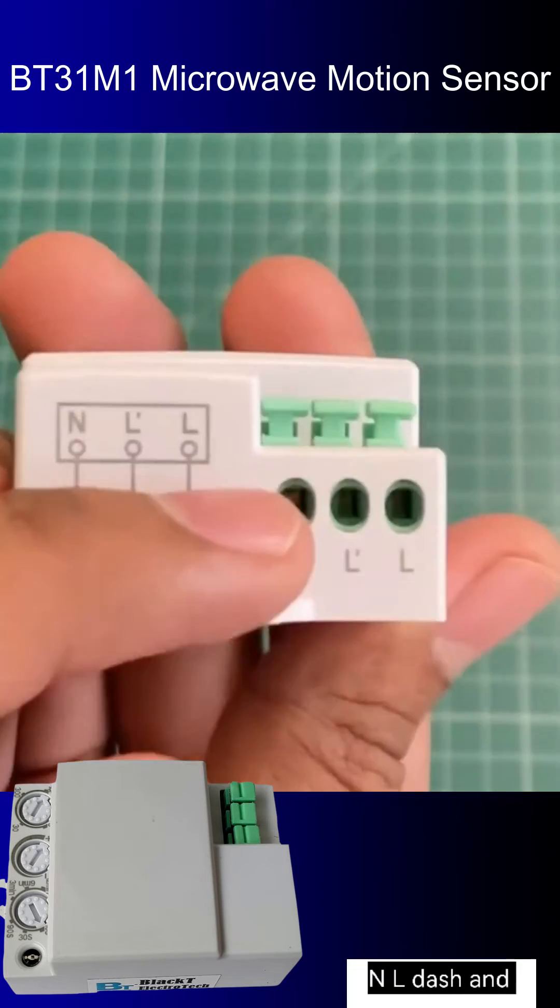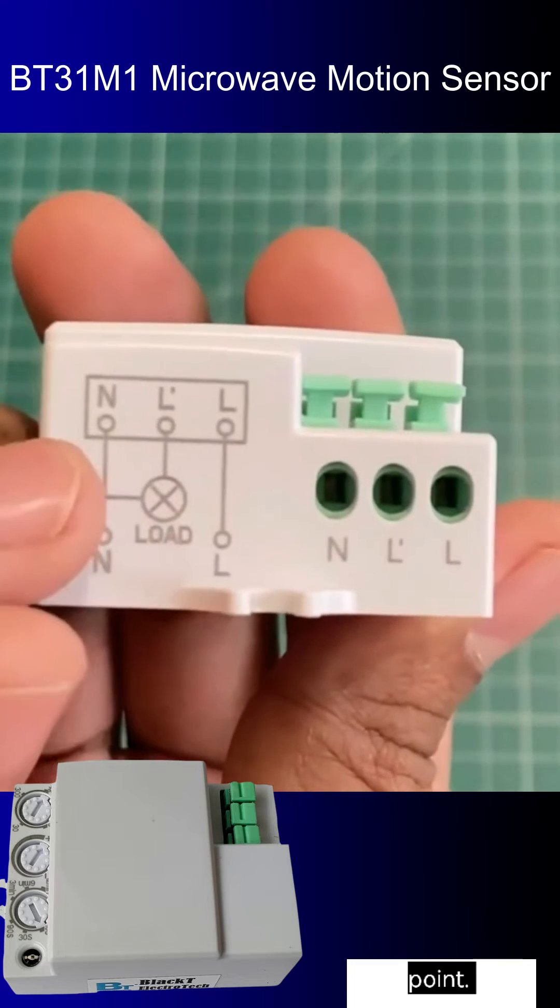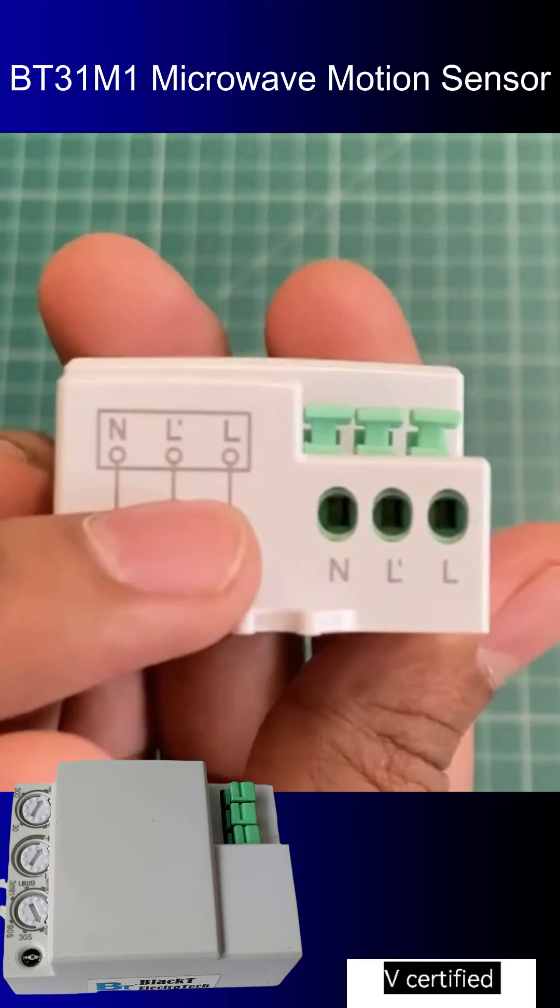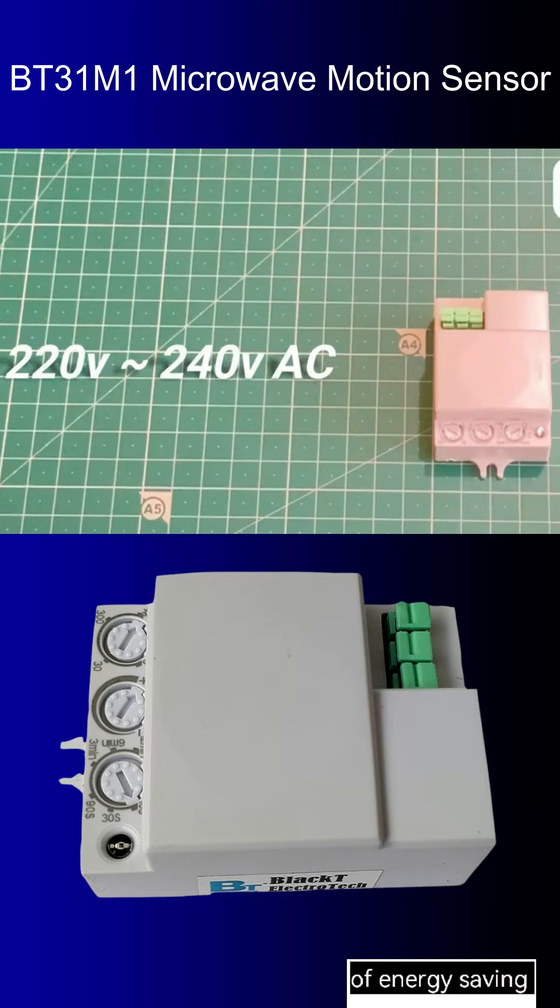Which are N, L dash and L. N is common neutral point, and we have to connect load to N and L dash point. And L is phase 230 volt supply point. This is TUV certified 230 volt with load capacity up to 1200 watt of energy saving load.